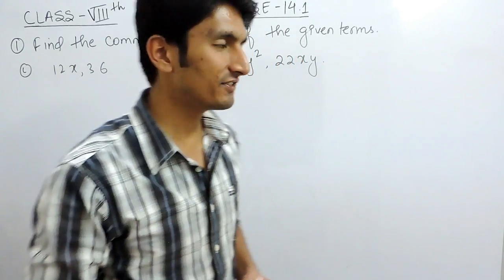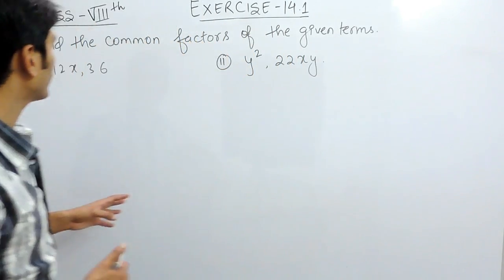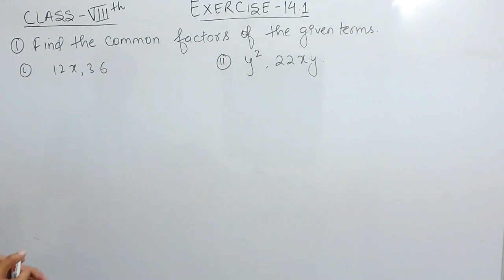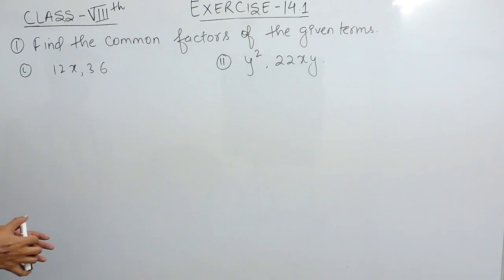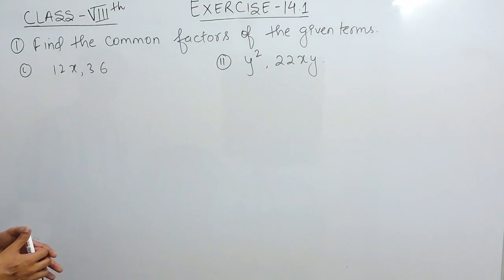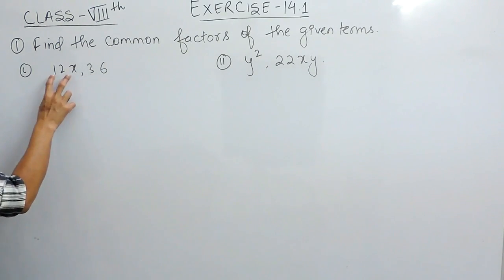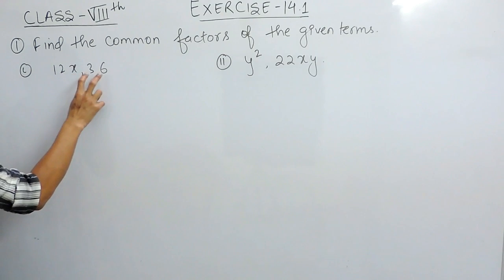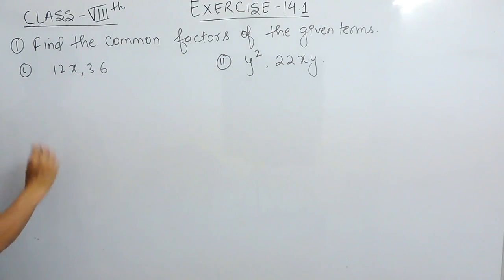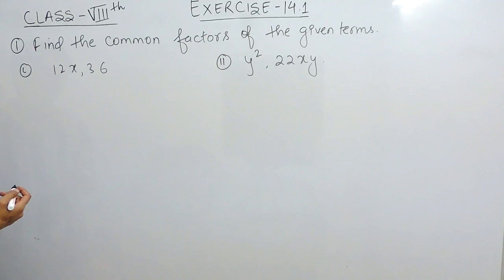Hello everyone. In this video we are going to solve question number one of Exercise 14.1. In this question you have to find the common factors of the given terms. Here are two terms: 12x and 36. You have to find their common factors, so let's first find the factors.